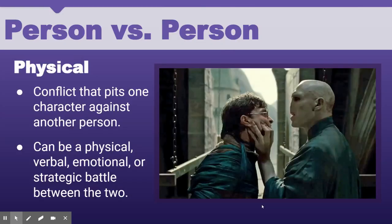Person versus person is often called physical conflict, but don't let that be misleading. You can have a physical battle between two characters, but it can also be an emotional or strategic power battle. This is the classic protagonist versus antagonist — the traditional good guy versus bad guy. It's one of the easier conflicts to identify because it's filled with drama and there's clearly another character the protagonist is going up against. A really popular example is Harry Potter versus Voldemort.